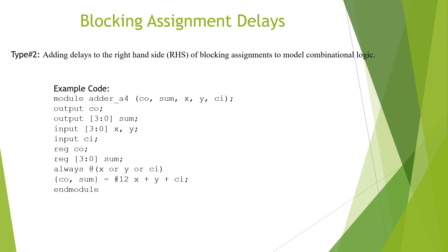Next is Type 2 of blocking assignment delays. Here we are adding delays to the right-hand side of blocking assignments to model combinational logic delays. In this assignment we added a #12 delay on the RHS to model the combinatorial logic delay.